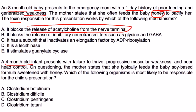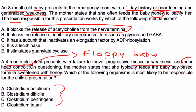And the last one: a four-month-old infant presents with failure to thrive, progressive muscular weakness, and poor head control. On questioning, the mother states that she typically feeds the baby soy-based formula sweetened with honey. Which of the following organisms is most likely to be responsible for the child's presentation? I like this description, poor head control. That's referring to the baby's floppiness. Floppy baby. I also like this question because it gives you four types of clostridium. There's actually even one more - there's five, I think. Now you might get confused by this and say, well, I have no idea. But interestingly, each type of clostridium has their own disease and own symptomatology. And in this video, of course, we were talking about the first one, Clostridium botulinum. So that's the correct answer, A.